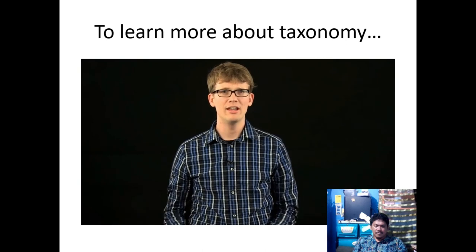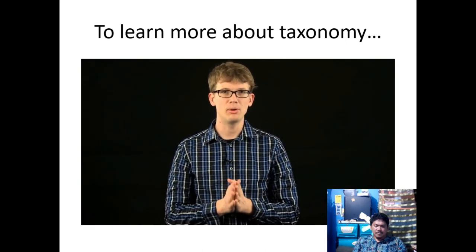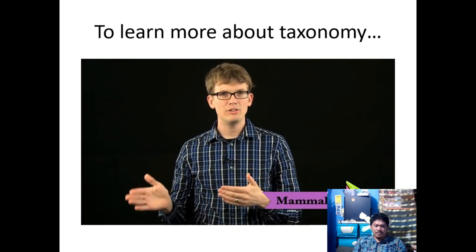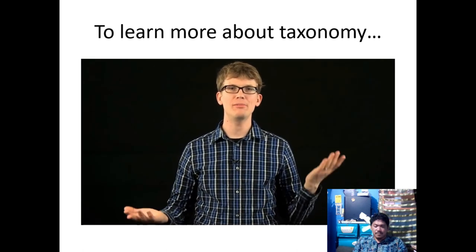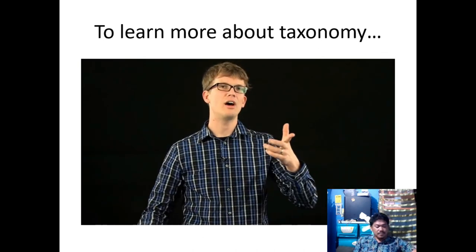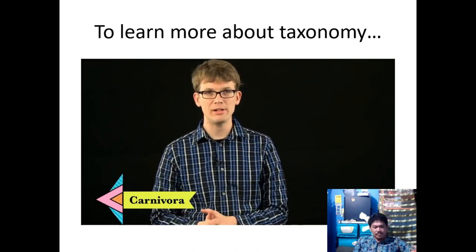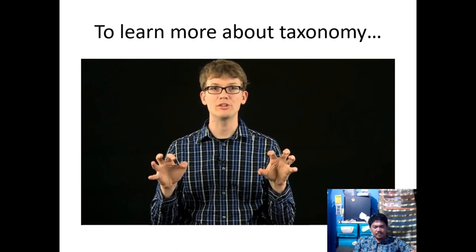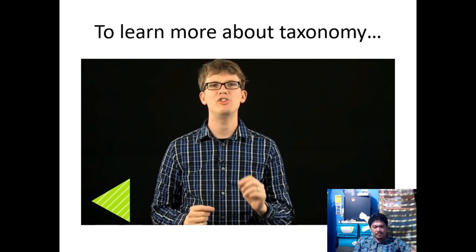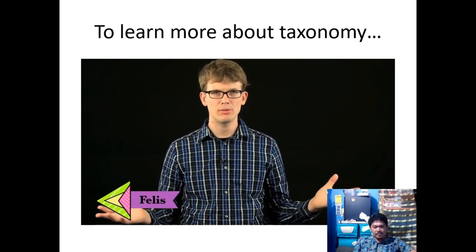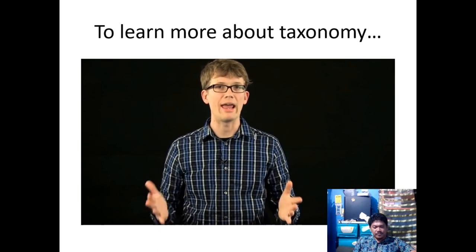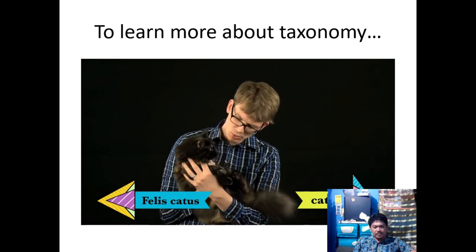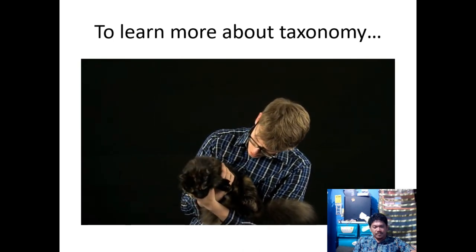The cat lactates, gives birth to live young, has fur, and has three special tiny bones in its ears that only mammals have — placing it in class Mammalia. Like weasels and dogs, cats are in the order Carnivora, and in the family Felidae — whose members have lithe bodies, roundish heads, and retractable claws. They are smaller than tigers and panthers, placing them in the genus Felis. The species name is catus, making the full binomial name Felis catus.